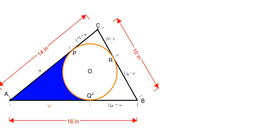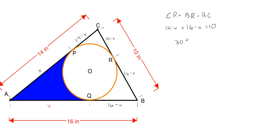So how does this help us? Well, we know that CR plus BR will be equal to the total length of BC. This means 14 minus X plus 16 minus X has to equal 10 inches. Simplifying, we get 30 minus 2X equals 10, so X equals 20 divided by 2, which is equal to 10 inches. So our X is 10 inches.